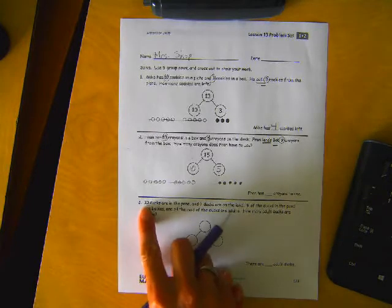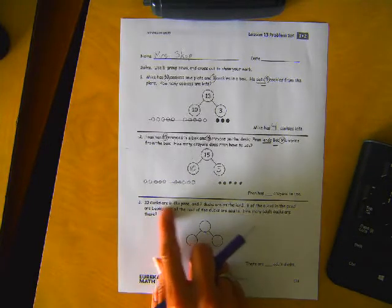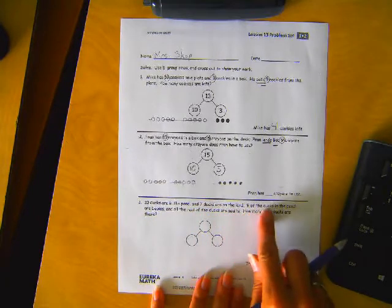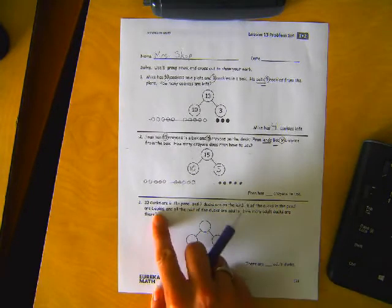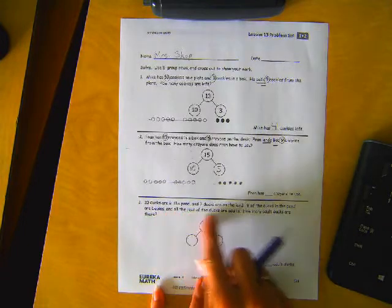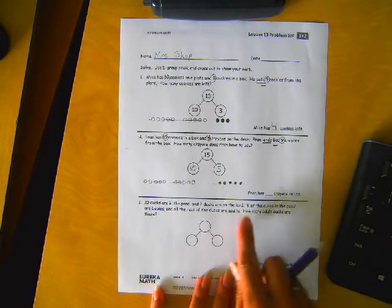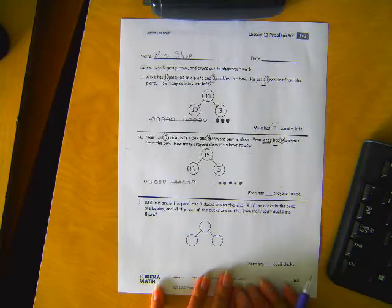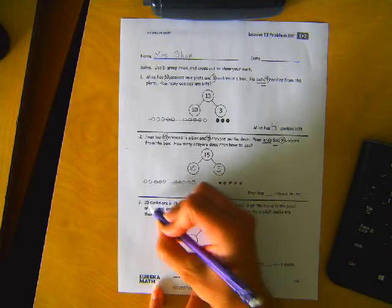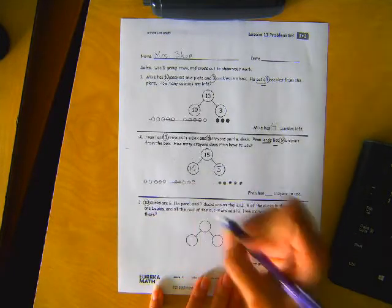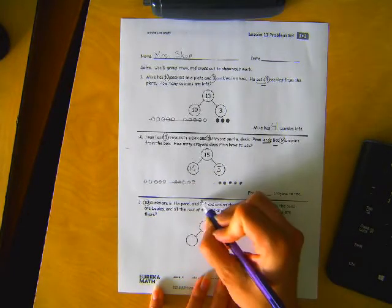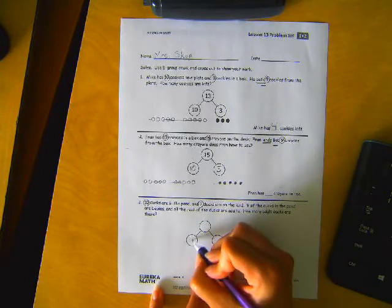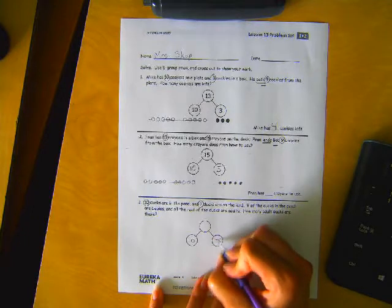Number three. Ten ducks are in the pond and seven ducks are on the land. Nine of the ducks in the pond are babies and all the rest of the ducks are adults. How many adult ducks are there? Let's circle that important information. There's ten ducks in the pond. Seven ducks are on the land.